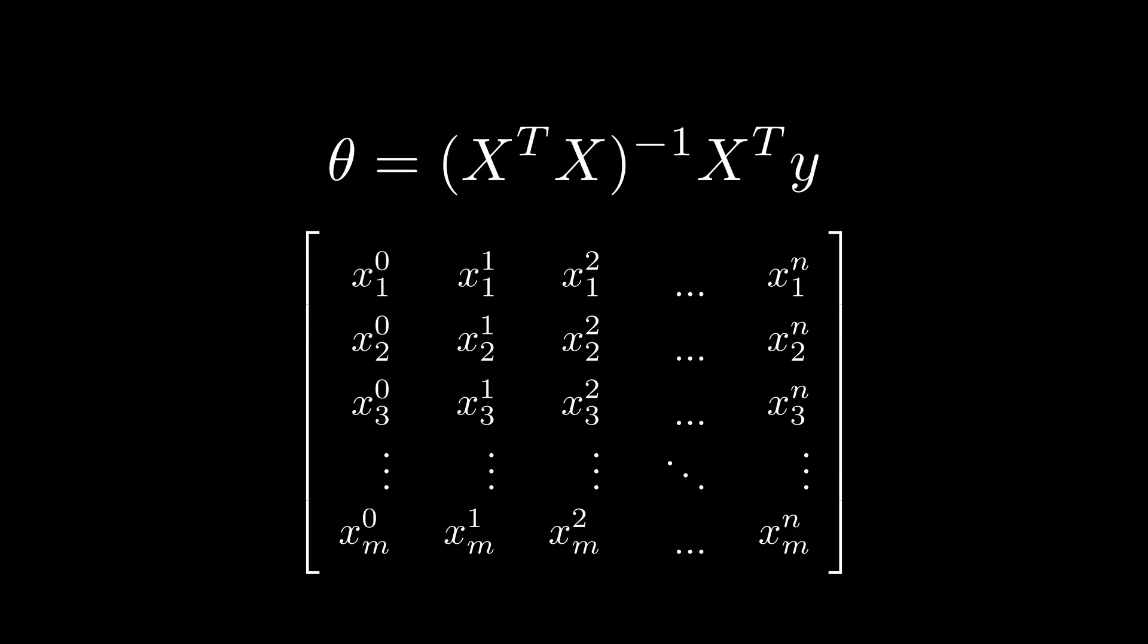That would be all you needed if you wanted a linear polynomial line. However, you can keep going if you want higher order polynomial lines. Like for a quadratic, you would use the first three columns. And for a cubic, you would use the first four columns, and so on.